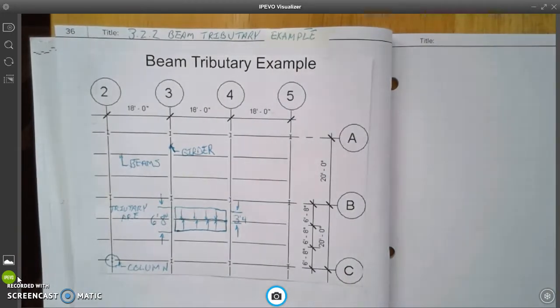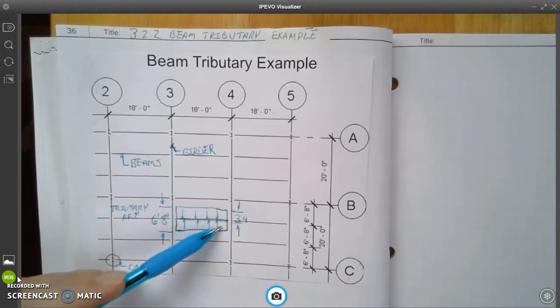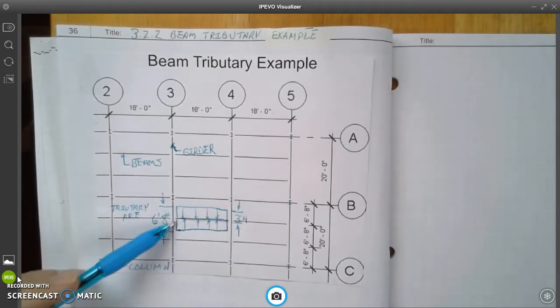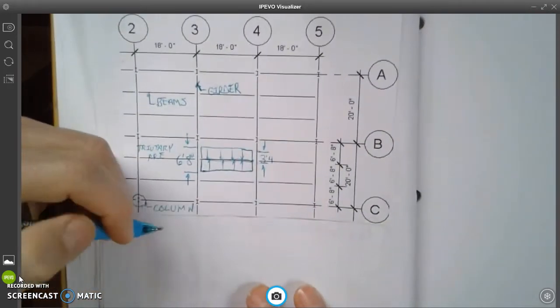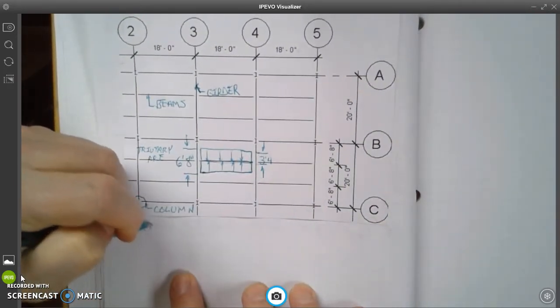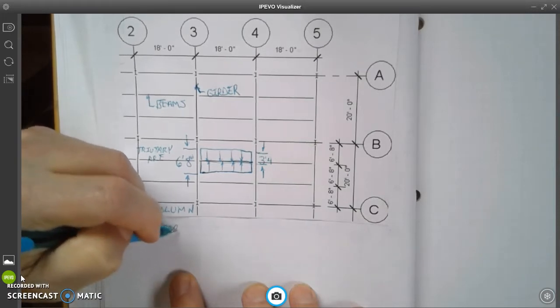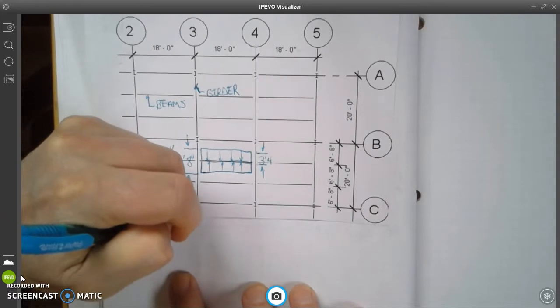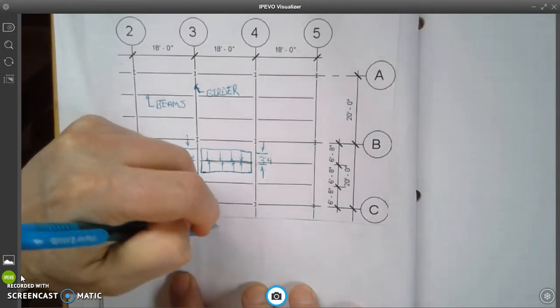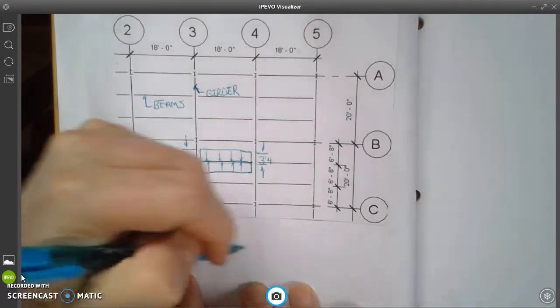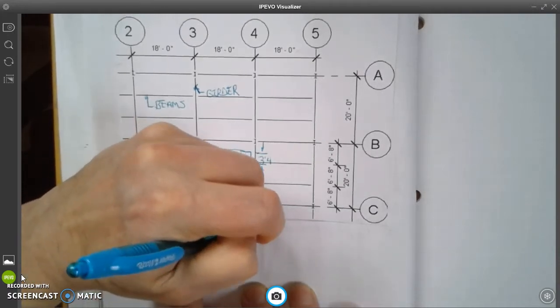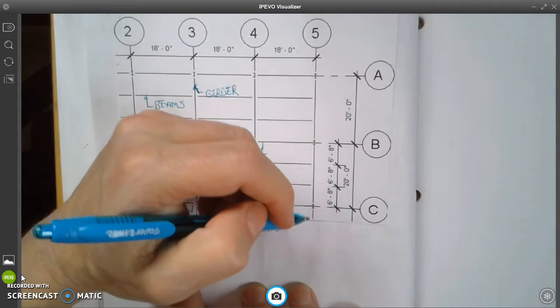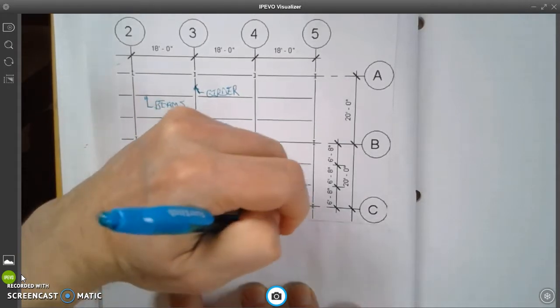So right here, this 6 feet 8 inch distance, that is referred to as the tributary area. And we now need to calculate how many square feet there are in this tributary area here around this beam. Now the formula for doing that is going to be down here. I'm going to write this: tributary area is going to be equal to the beam span times the tributary width.